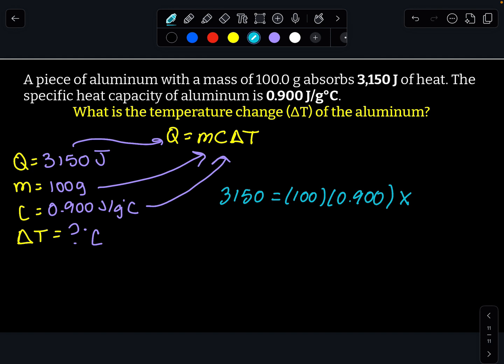All right, now we just do algebra, right? In order to get x by itself, I need to divide both sides by whatever 100 times 0.9 is. So I'm just going to do 100 times 0.900, 100 times 0.900. I'm going to simplify this a bit. So this is going to become 3,150 over, okay, calculator 100 times 0.9 gets me 90 equals x.